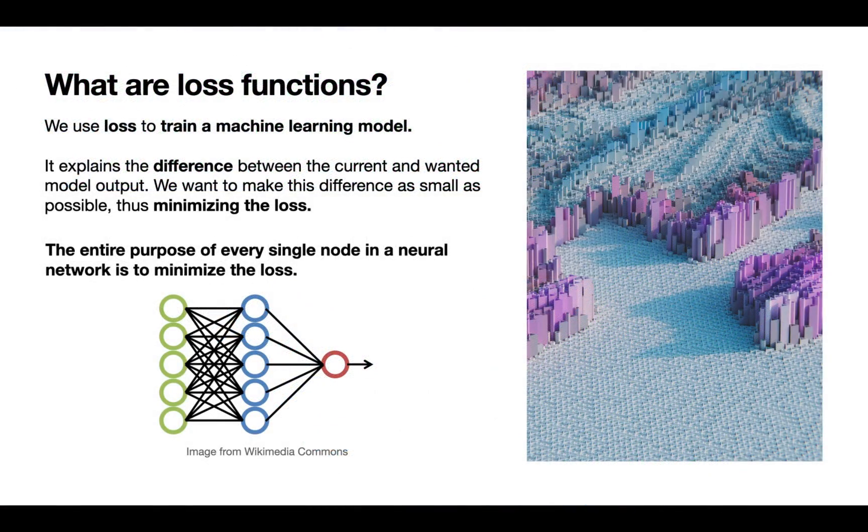We use loss to train machine learning models. The loss function explains the difference between the current and the wanted model output or the model prediction. The goal is to make this difference between the current and the wanted model output as small as possible, and this is why we want to minimize the loss.